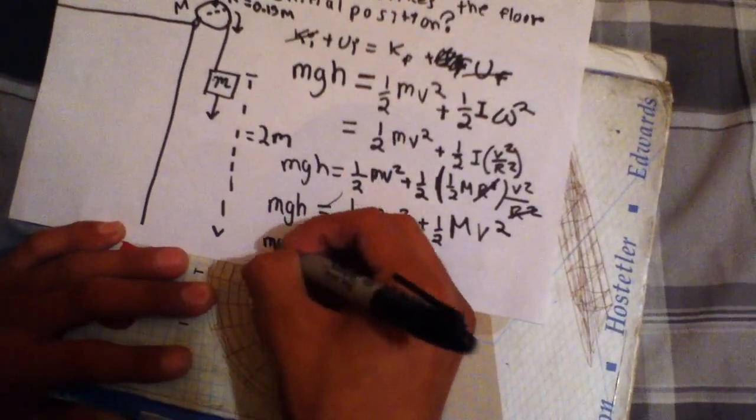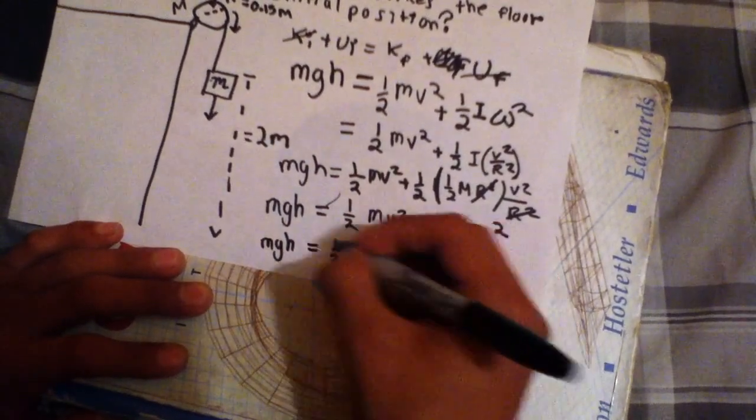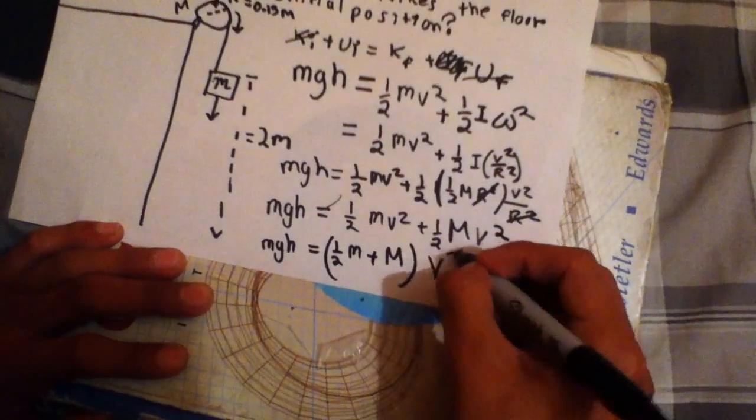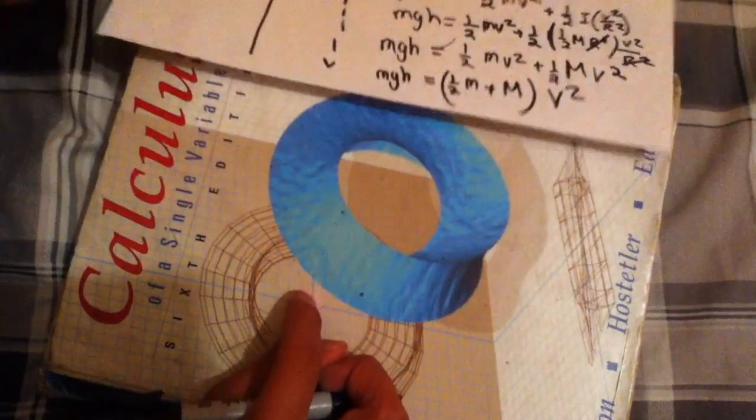So, and just bringing up a common misconception. So MGH equals one half m plus big M. We factor it out, this term. And then, let me get another paper.